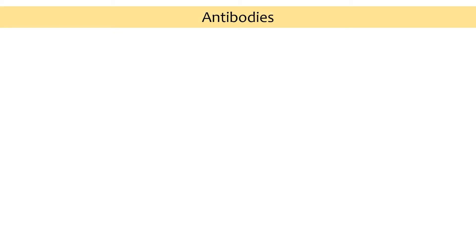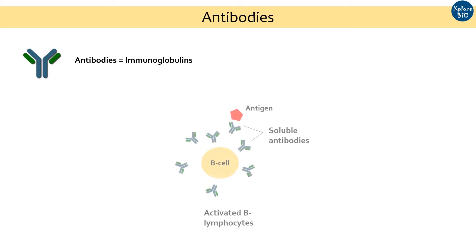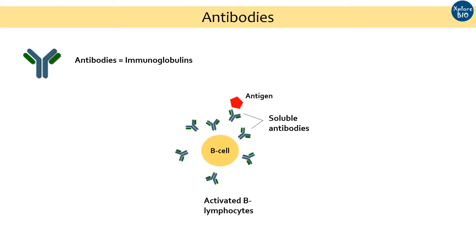Let's get started. Antibodies are proteins called immunoglobulins, produced by a specific type of immune cells called activated B cells, or plasma cells, or B lymphocytes.